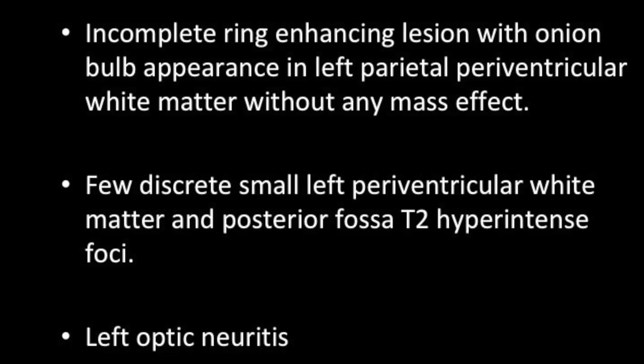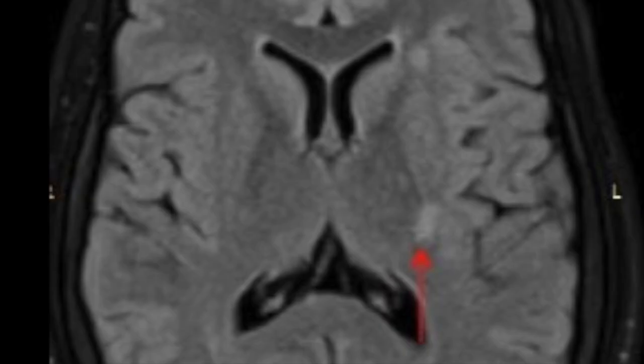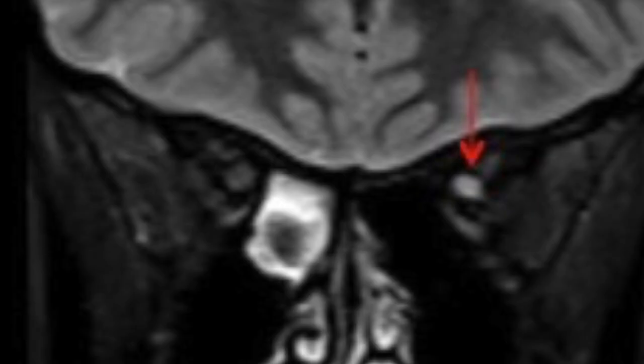To summarize, there is an incomplete ring-enhancing lesion with a classical onion bulb appearance in the left parietal periventricular white matter. Considering the large size of the lesion, no significant mass effect is seen. There are also few discrete small left periventricular white matter and posterior fossa T2 hyper-intensities, and left optic neuritis.